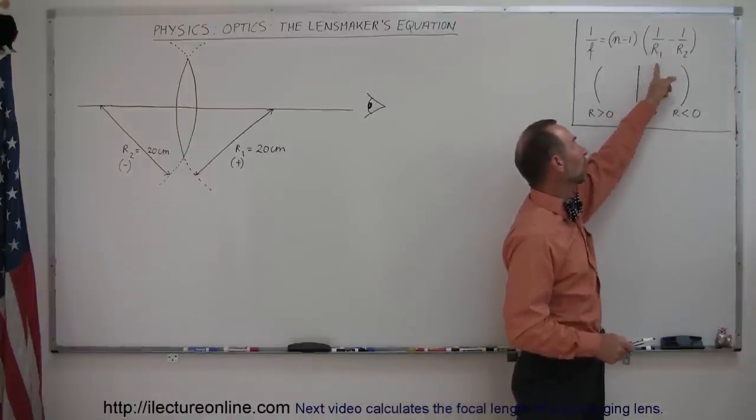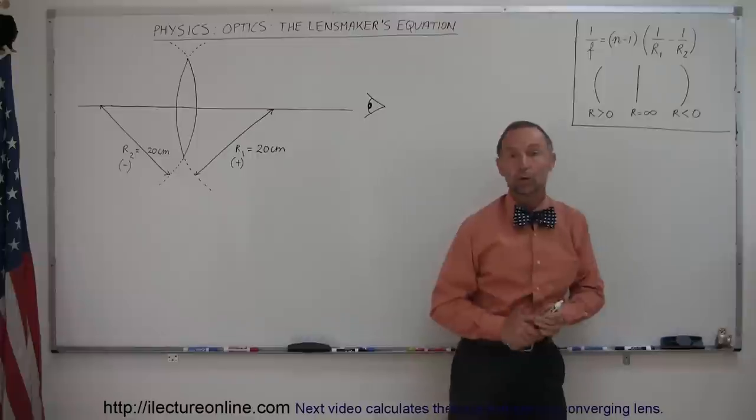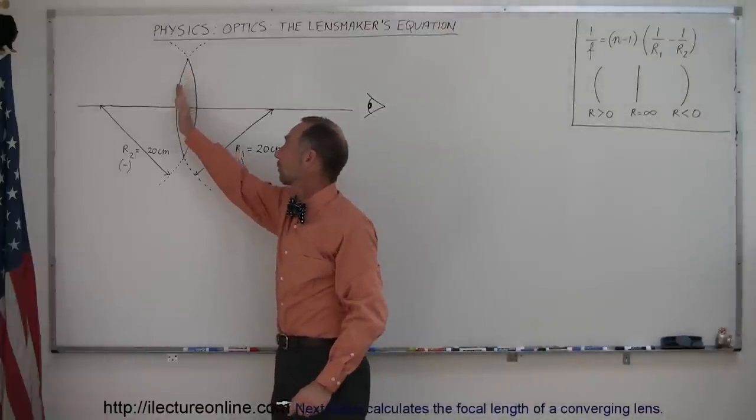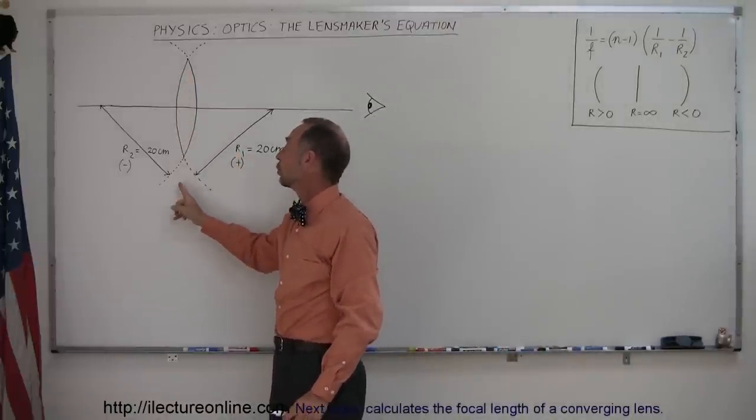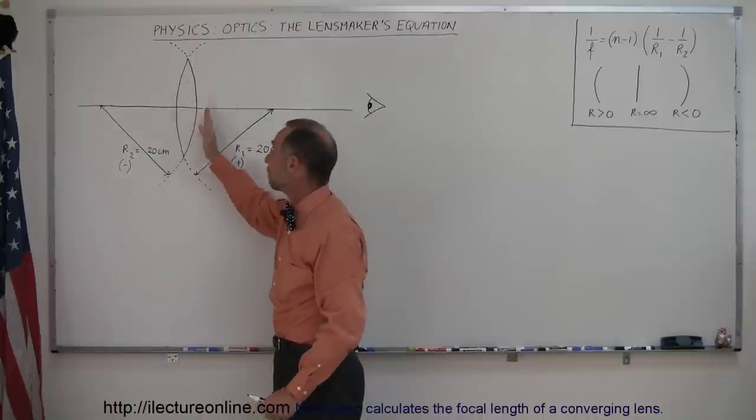Then times the quantity 1 over R1 minus 1 over R2. R1 is the radius of curvature of the front end of the lens. R2 is the radius of curvature of the back side of the lens.